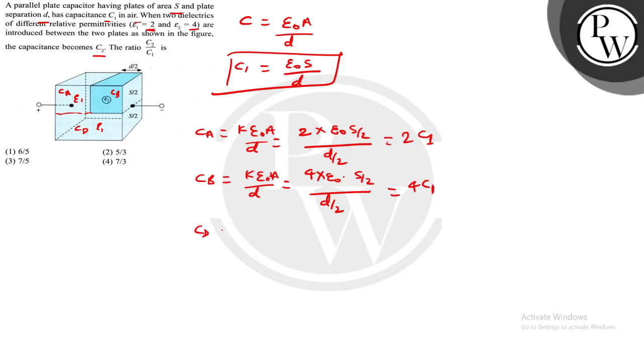Now I will talk about CD. CD is K epsilon naught A by D. K is 2 times epsilon naught, area is S by 2, and distance is D. So this is equal to C1.